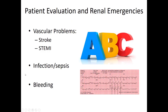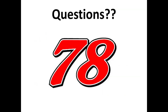Just like any emergency approach: address ABCs first. If they're bleeding, do CAB — direct pressure, then tourniquet. Realize these patients are at very increased risk for vascular problems, so get a 12-lead for multiple reasons: look for STEMI, look for hyperkalemia, and think about stroke. They're very prone to infection, especially if they have a tunneled catheter or are doing peritoneal dialysis. Ask about bleeding because they're already chronically anemic due to lack of erythropoietin and their platelets aren't working. If you have any questions, reach out. Thank you.